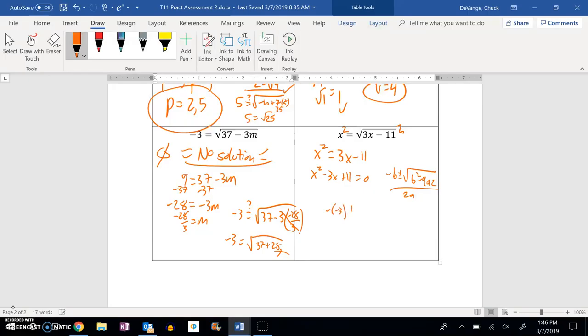Negative negative 3 plus or minus the square root of negative 3 squared minus 4 times a times c, the whole thing over 2a, which would be 3 plus or minus, this is 9 minus 44 over 2.